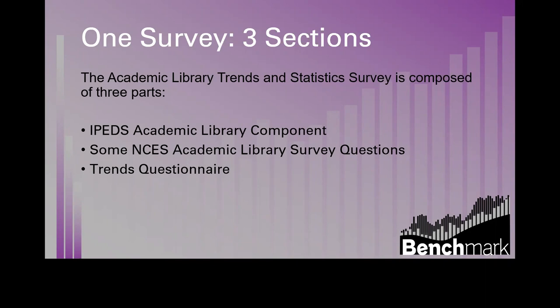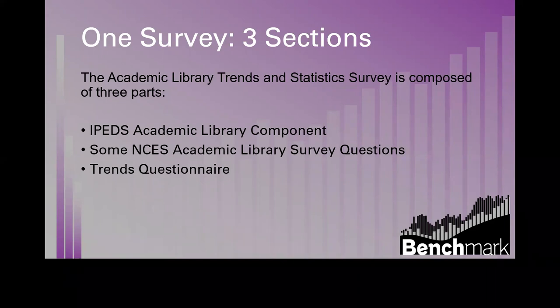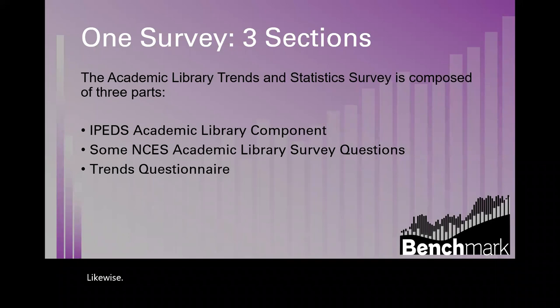Every institution of higher education receiving federal funding must respond to the 1,500-item IPEDS survey. The academic library component is a small part of it, but our survey replicates every library question required by IPEDS. We give you the same instructions and the same definitions, and whenever IPEDS makes changes to this part of the survey, we do likewise. When you complete this section of our survey, you can download your responses and send the spreadsheet to your institutional key holder, or upload that file directly into the IPEDS survey.